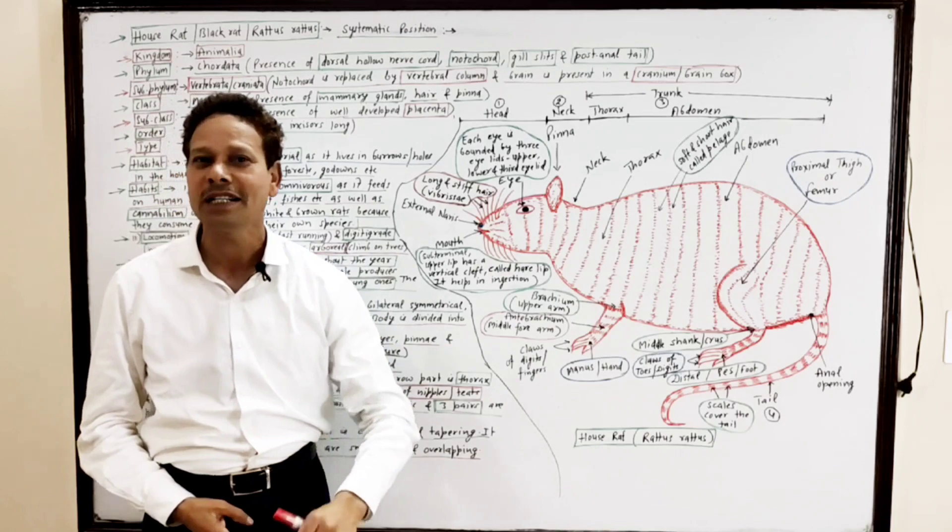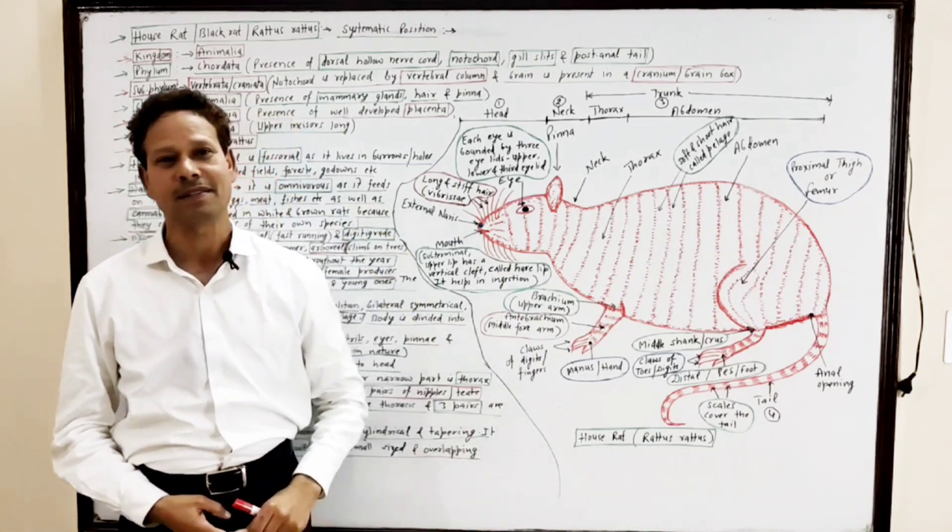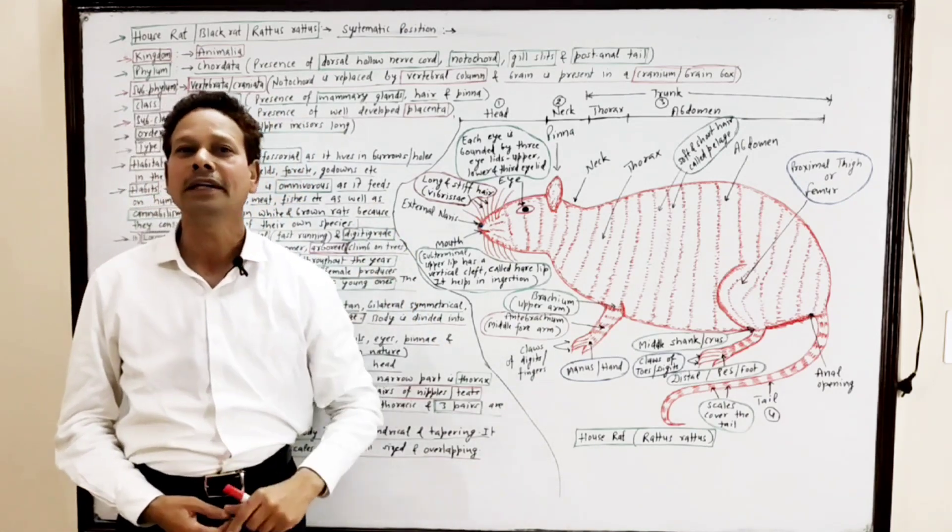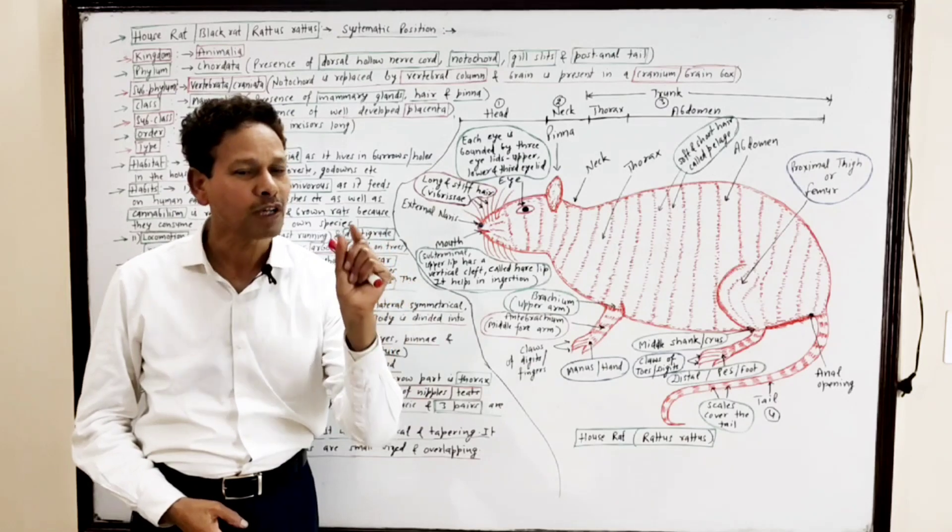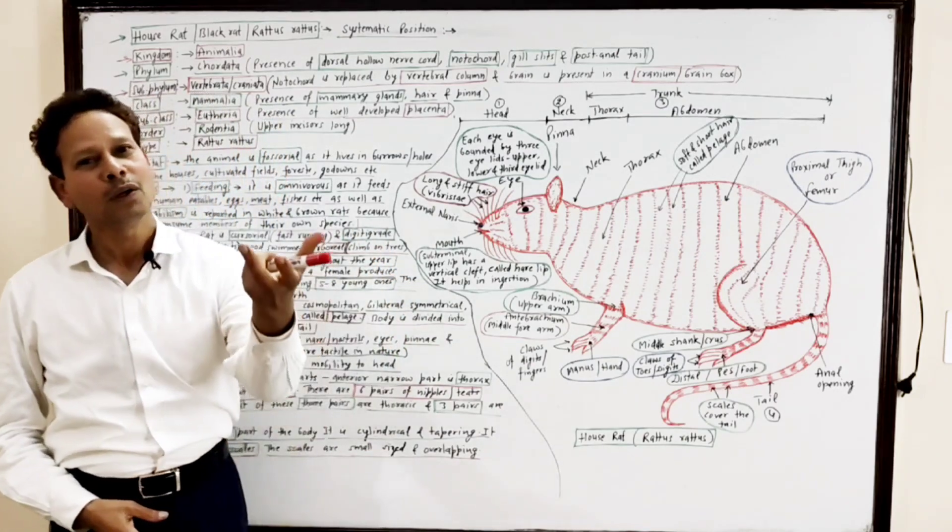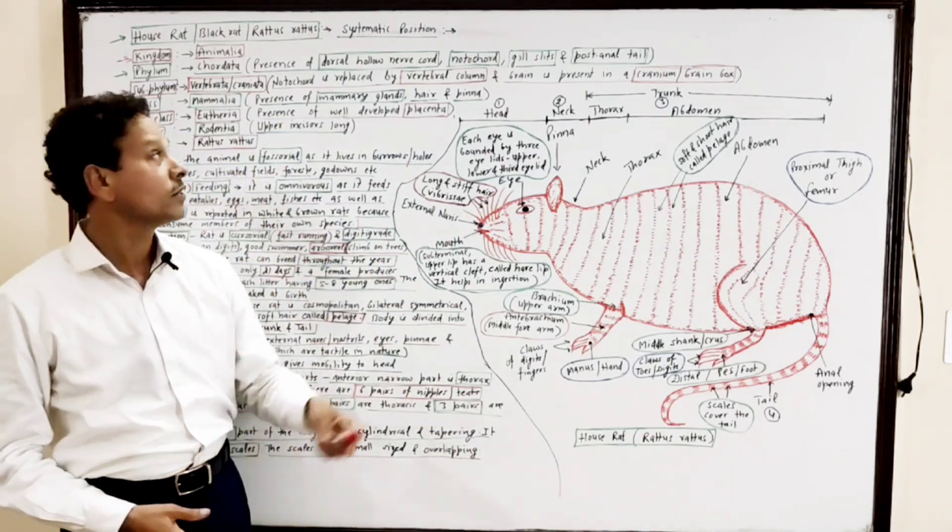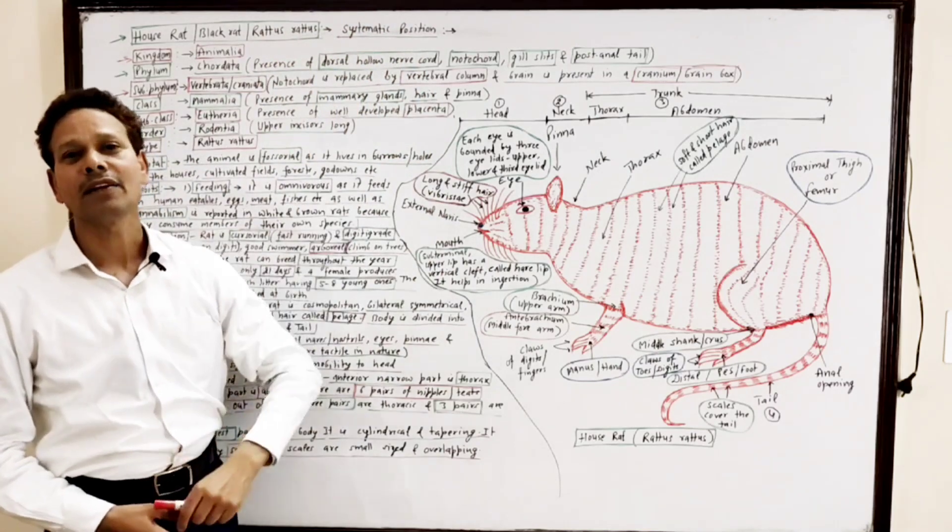It is black rat, Rattus rattus. First of all, I will clear systematic position, classification of common rat, house rat.